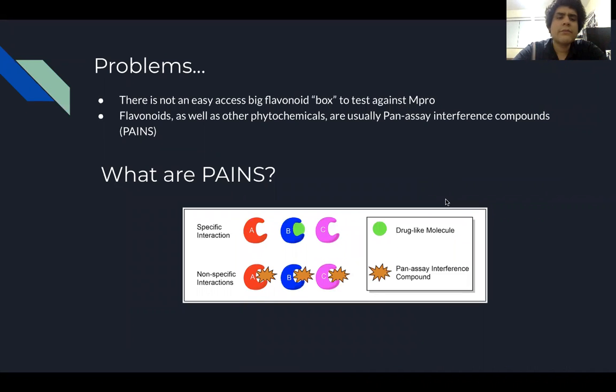But there are some problems with working with flavonoids. The first one is that there's not an easy access big flavonoid structural database or box to test against the main protease. And I think this is the main reason why current investigations only focus on evaluating libraries with less than roughly 100 flavonoids. And the second problem is that flavonoids, as well as other phytochemicals, are usually pan-assay interference compounds, or as they are widely known, PAINs.